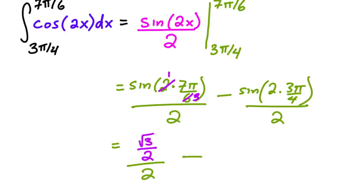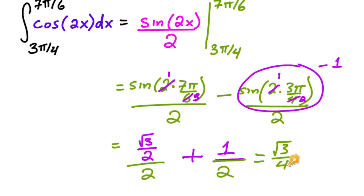And this is still all over 2. And then minus, let's reduce this one. This is 4 and 2 reduced to 1 and 2. So this is sine of 3π over 2, which is equal to negative 1. So this is going to be negative and negative 1, that's plus 1, and then over the 2. So then this is just root 3 over 4 plus 1 half, or you can write it as root 3 plus 2 all over 4, whichever way you like. Both are acceptable.